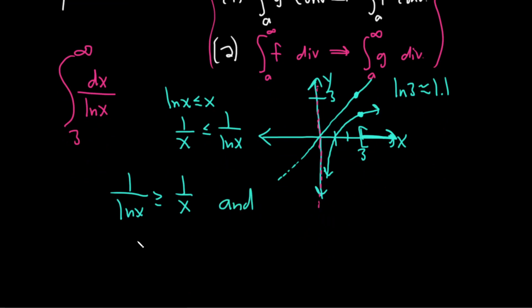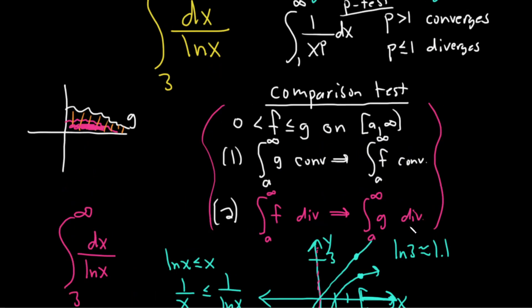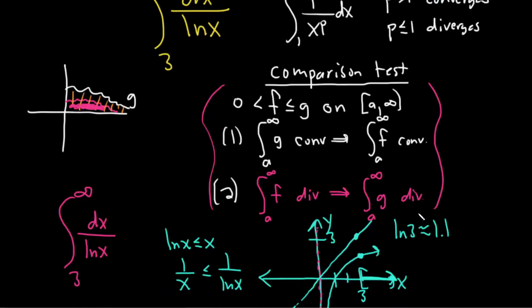And we know something. The improper integral from 3 to infinity of 1 over x dx, this diverges by the p-test. So by the p-test, since p is equal to 1, which is less than or equal to 1, so it diverges by the p-test. Recall that that was one of the conditions for divergence on the p-test.